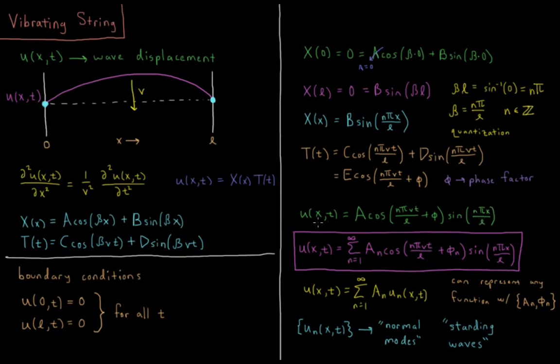Now this is just one particular solution. This is actually true for any value of n. So what we can do is add up any particular linear combination of all of these solutions. So our most general solution to the case of a vibrating string is that the amplitude is a sum from n equals one to infinity of some constant a sub n times cosine n pi v t over L plus a phase factor phi n times sine n pi x over L.